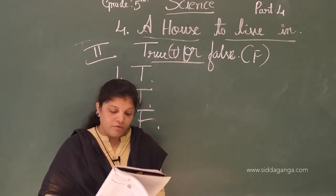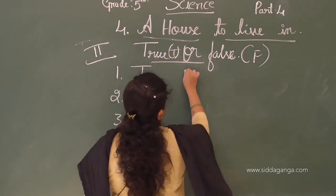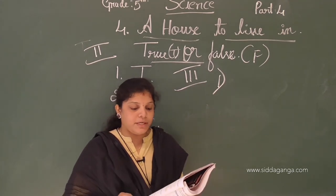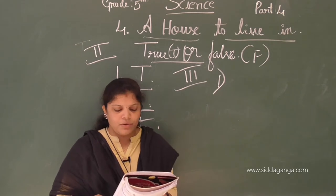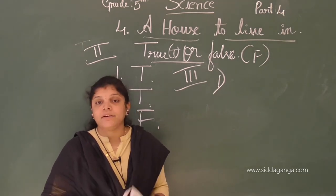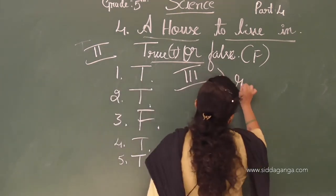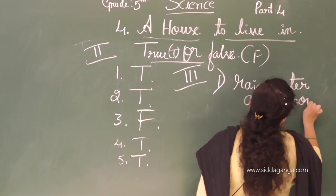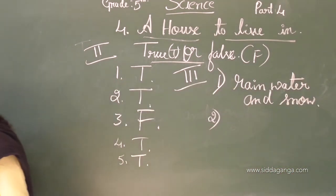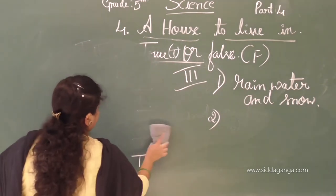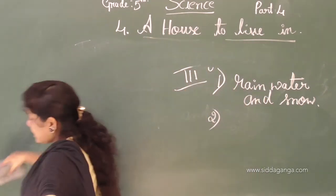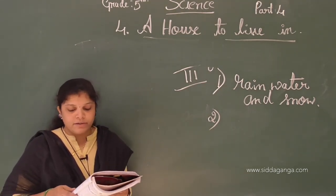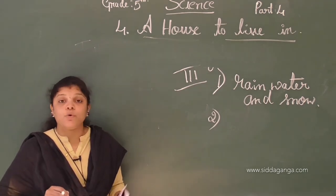Next we are going to find out the answers for fill in the blanks — the third section. First: houses on the hills have sloping roofs to drain off blank and blank. The answer is rainwater and snow. Houses on hills have sloping roofs to drain off rainwater and snow. If it is a flat roof, it will collect snow and rainwater and damage the house.